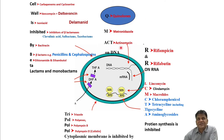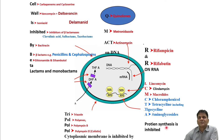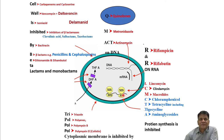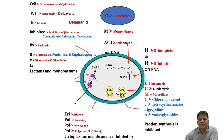Quinolones act on DNA — Q for quinolones, M for metronidazole, and erythromycin — these three drugs act on DNA. R-squared acts on RNA: rifampicin and rifabutin, both used in tuberculosis. Protein synthesis is inhibited at two levels — A acting on the smaller 30S subunit of the ribosome: aminoglycosides including gentamicin, amikacin, streptomycin; and the tetracycline group including tigecycline, recently added to our armamentarium.